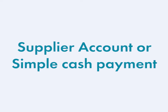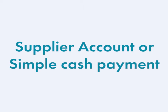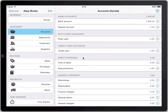offer you credit — meaning you can pay later — you should set them up as a supplier account. If it's a one-off purchase where you pay the full amount straight away, you should enter it as a cash-based transaction from petty cash, a bank account, or credit card. Starting with the simple case when no supplier account is needed: